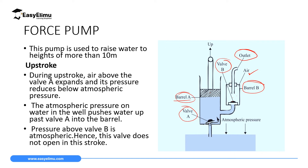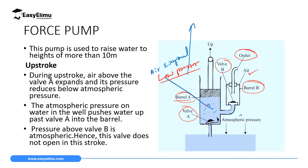During upstroke — when you pull upward — the piston moves up and the air inside barrel A expands. When air expands inside, there is low pressure. Atmospheric pressure outside is very high, and this high atmospheric pressure forces valve A to open. The liquid moves through valve A into barrel A. Once the liquid reaches barrel A, the upstroke is complete. Note that during upstroke, valve B was kept closed by the air above it.